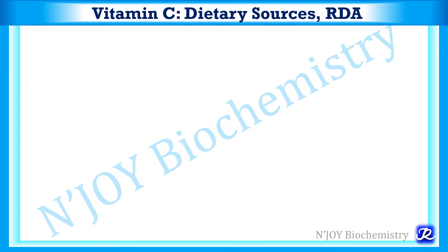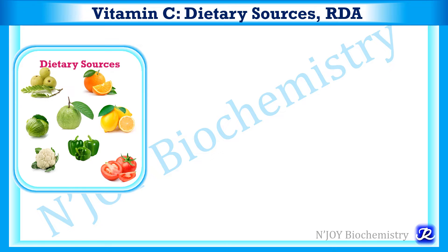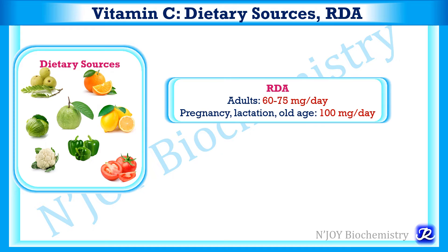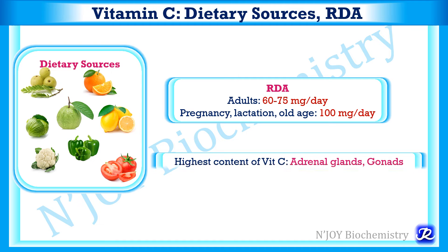The richest source of vitamin C is amla, that is Indian gooseberry. Other good sources are oranges, lemon, papaya, guava, green leafy vegetables like cabbage, cauliflower, capsicum, and green peas. The RDA of vitamin C in adults is 60 to 75 mg per day, while in pregnancy, lactation, and old age it becomes 100 mg per day. The highest content of vitamin C is present in the adrenal glands and gonads.